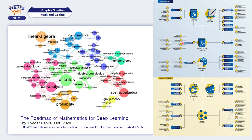This map shows how mathematics is related to deep learning. The roadmap of mathematics for deep learning includes calculus, linear algebra, multivariable calculus, statistics, and probability — all well connected to neural networks. In this course, we will learn linear algebra, calculus, statistics, and some combinatorics.